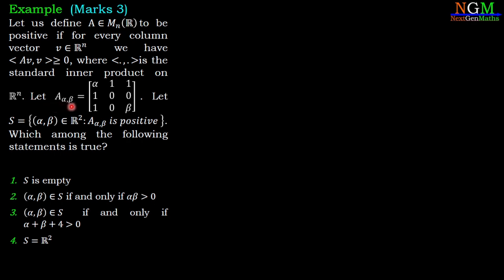Let A(α,β) be the 3×3 matrix: [α 1 1 / 1 0 0 / 1 0 β]. Let S = {(α,β) ∈ R² : A(α,β) is positive}. We have four options: (1) S is empty, (2) (α,β) ∈ S if and only if αβ > 0, (3) (α,β) ∈ S if and only if α + β + 4 > 0, and (4) S = R².